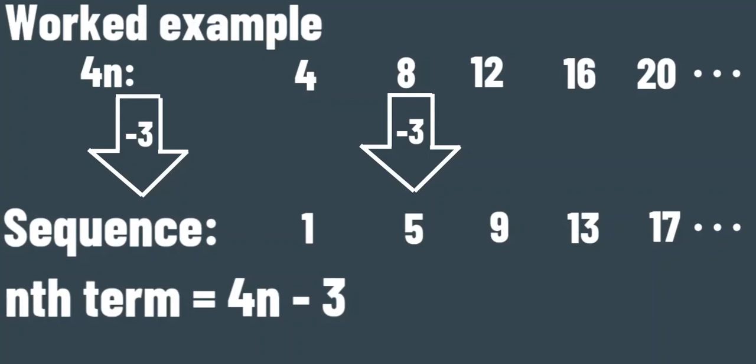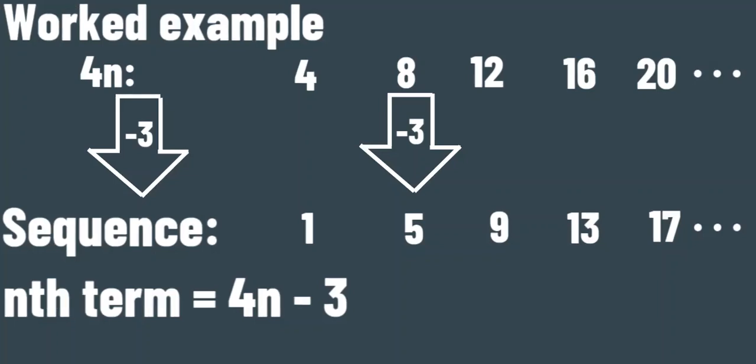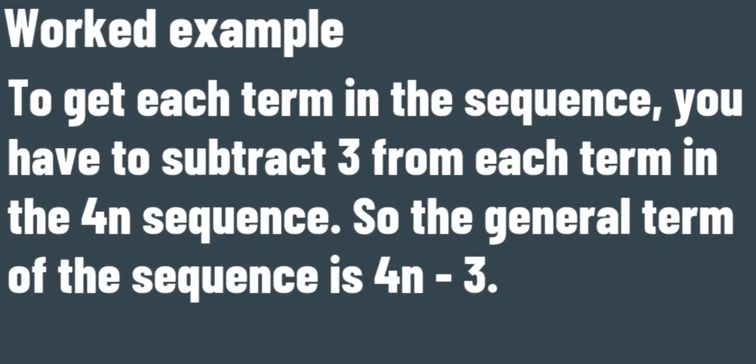Here is the working out and the answer. To get each term in the sequence, you have to subtract 3 from each term in the 4n sequence, so the general term of the sequence is 4n - 3.